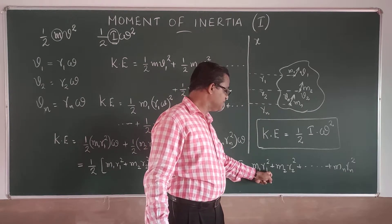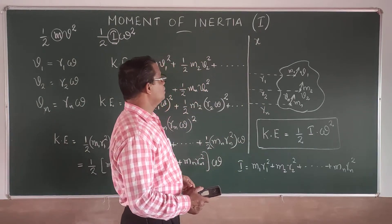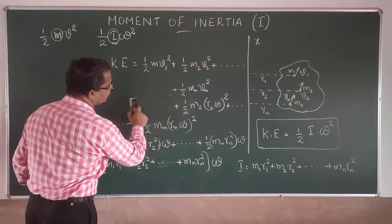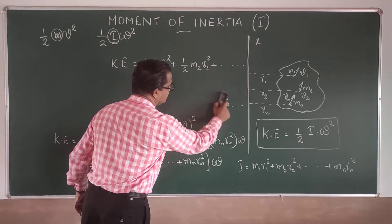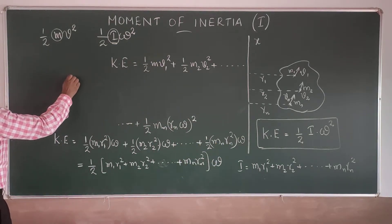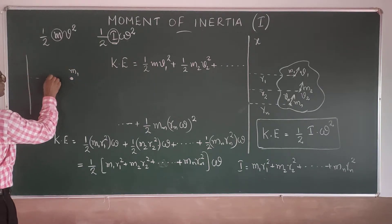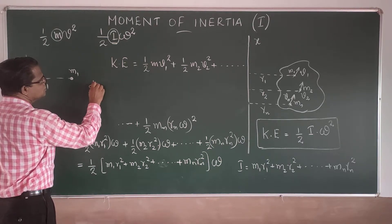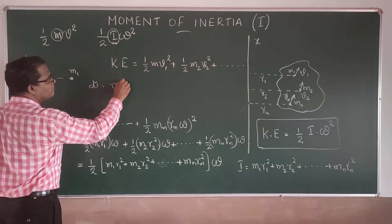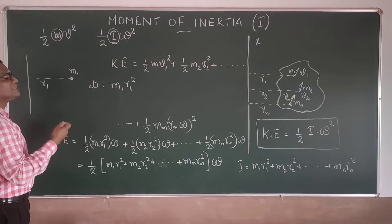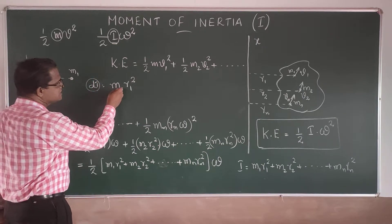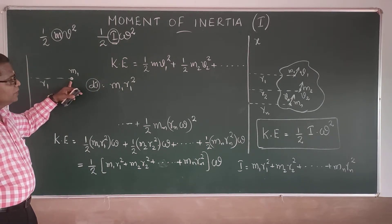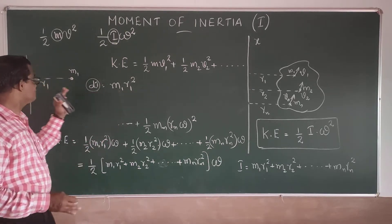From this, the moment of inertia for a mass particle depends on the mass and the square of its distance from the axis of rotation. For a mass m₁ at distance r₁, the moment of inertia is simply m₁r₁². So moment of inertia depends on both the mass of the body and the square of the distance from the axis of rotation.